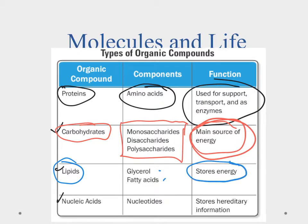Lipids are made up of glycerol and fatty acids, and this is how we store energy. They were also important in certain cell parts like the cell membrane. Finally, we talked about nucleic acids, which are made up of nucleotides — these are DNA and RNA, the ones that store hereditary information.